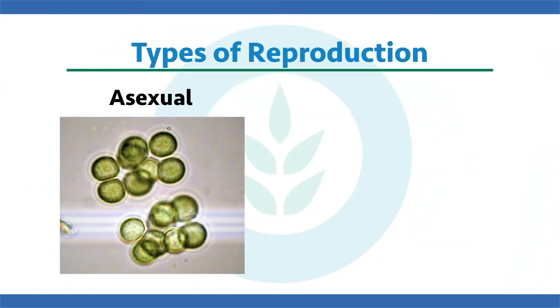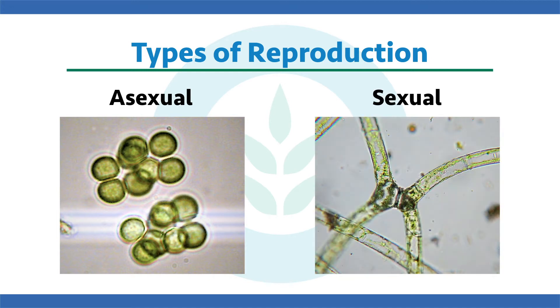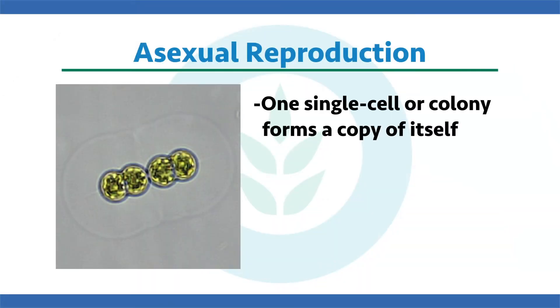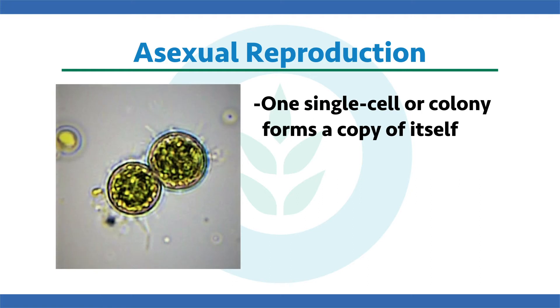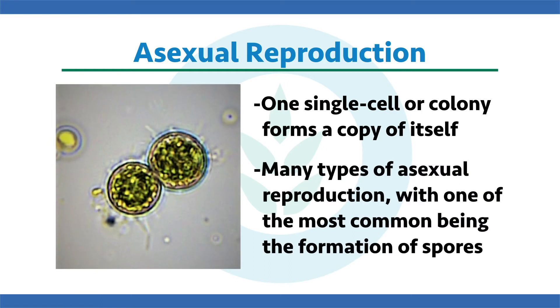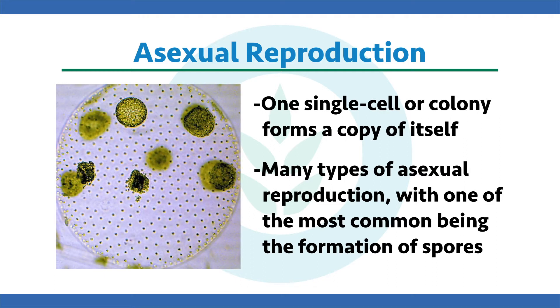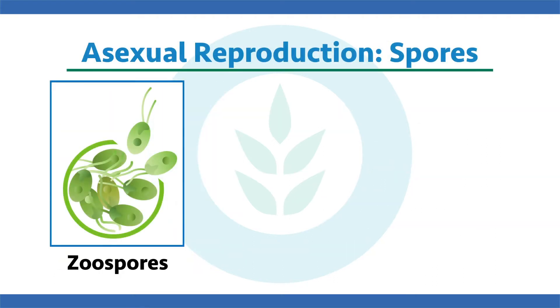In general, algal reproduction is very complex and spans many different types of methodologies. There's both asexual reproduction and sexual reproduction. Starting with asexual: basically that means a single cell or colony forms a copy of itself. One of the biggest types is formation of spores, including zoospores — tiny little flagellate copies of itself that can swim around and ultimately grow into a new adult algal cell.